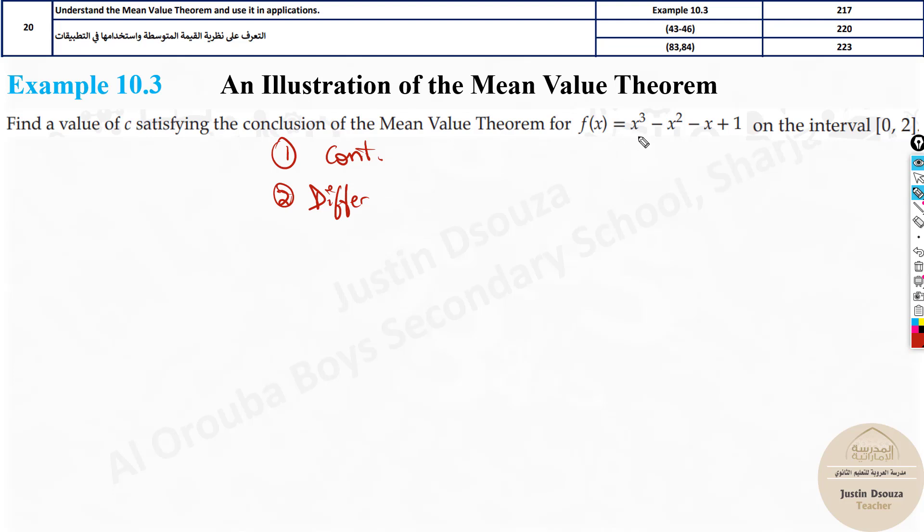This is a polynomial function. So yes, it is continuous. Yes. And differentiability, yes. You can write it as two statements. The given function is continuous and differentiable at the given interval. Why I'm writing this is because the exam will require it. It's better you write this out. Write this statement.